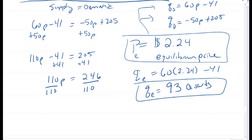Supply will meet demand, so everybody's happy—the supplier's happy and the consumer's happy. We've met our demand and supplied exactly the right amount in a sort of perfect market.